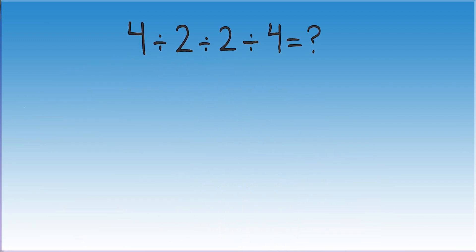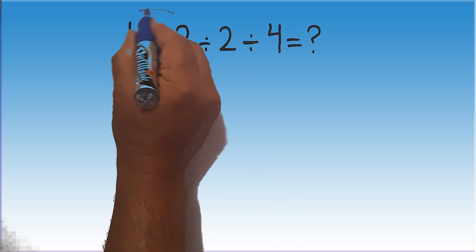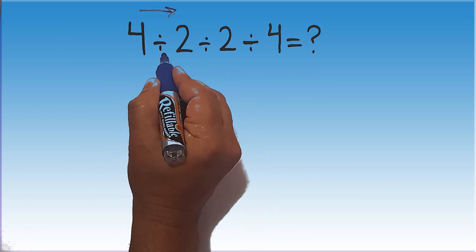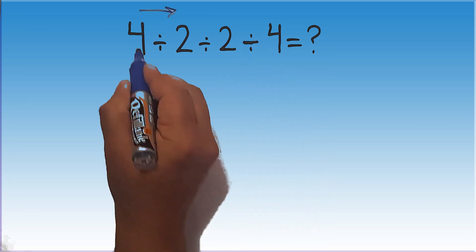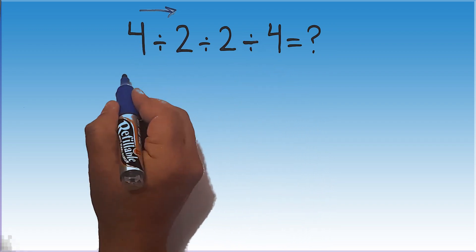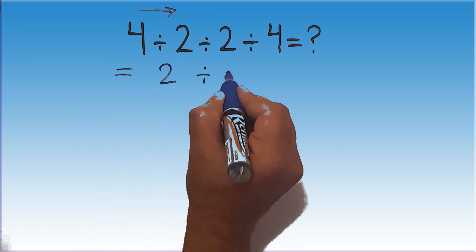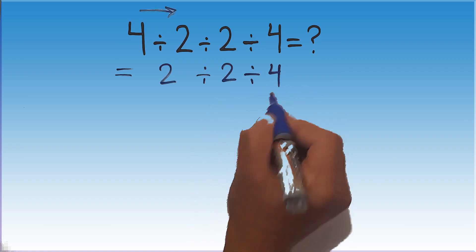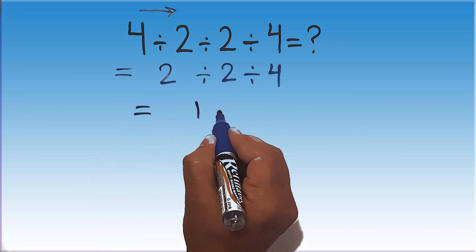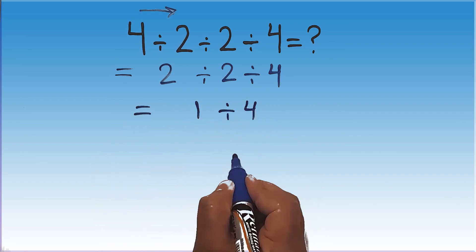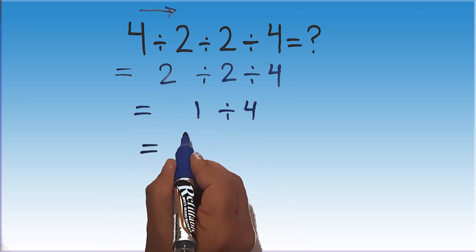Because, according to the order of operations, we have to move from left to right. So, first this division, then this division, and finally this one. 4 divided by 2 gives us 2. So, 2 divided by 2, and divided by 4. 2 divided by 2 equals 1. So, 1 divided by 4. Therefore, our final answer to this problem is 1 over 4.